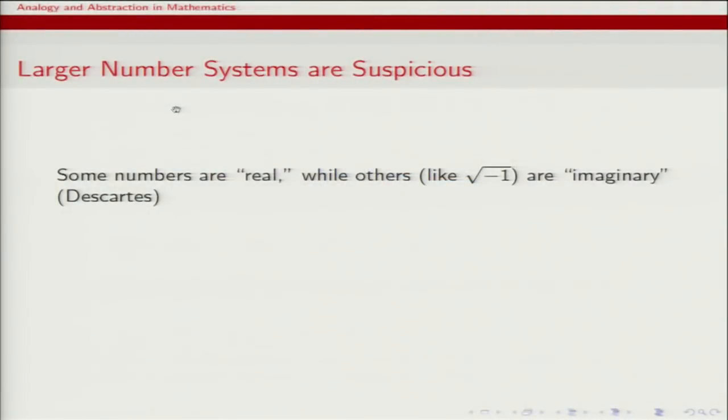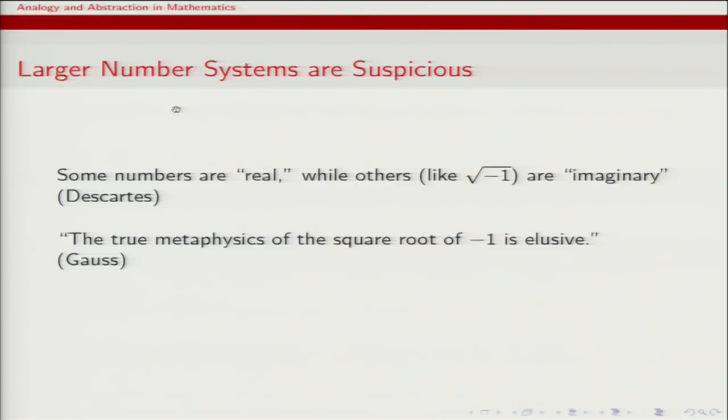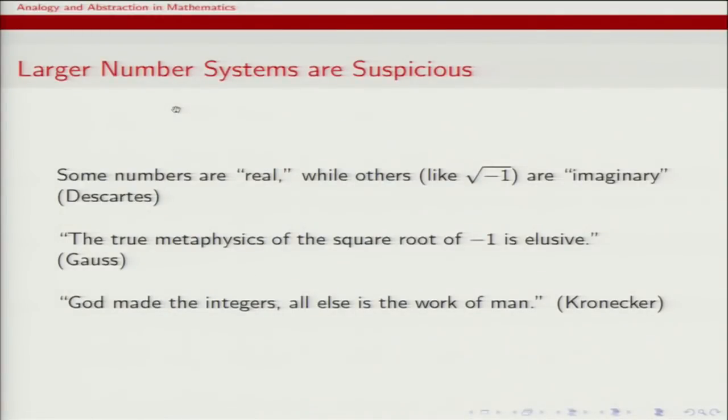This abstraction has bothered mathematicians throughout history, as you can see even in our terminology. Some numbers we call real numbers, and the square root of minus one is an imaginary number. This terminology goes back to Descartes and highlights a discomfort he had with quantities like the square root of negative one. Even 200 years later you can find this discomfort in Gauss, who certainly knew how to work with complex numbers and prove theorems, but was still bothered by them. And even later there's the famous quote attributed to Kronecker: God made the integers; all else is the work of man.